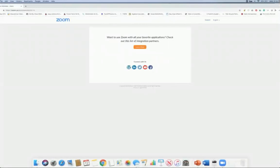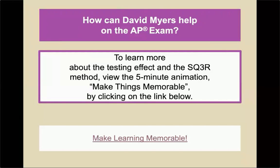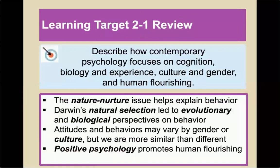That was a great overview of things that can really help you in this and many other classes. Now reviewing our beginning learning targets: the nature-nurture issue helps us explain behavior. Darwin's natural selection led to evolutionary and biological perspectives on behavior. Attitudes and behaviors may vary by gender or culture, but overall we are definitely more similar than different. And positive psychology promotes the idea of human flourishing and is a very popular field within psychology right now.